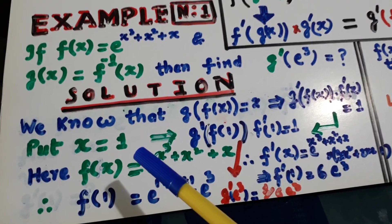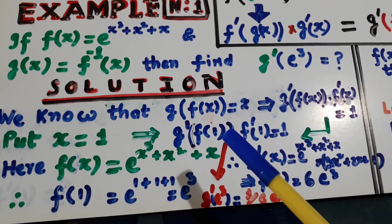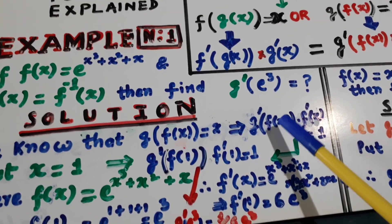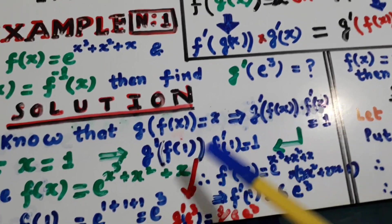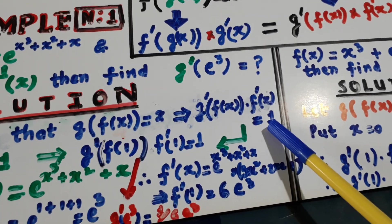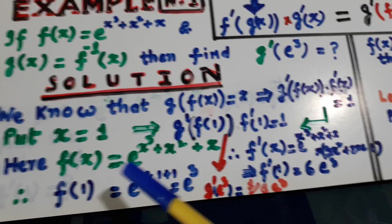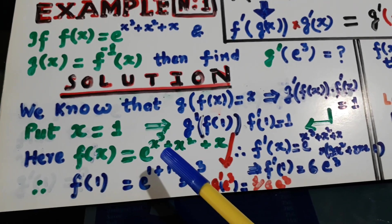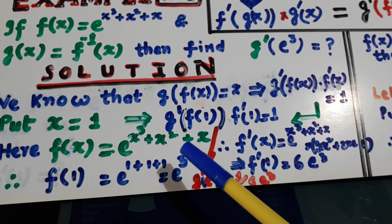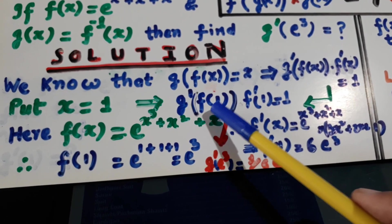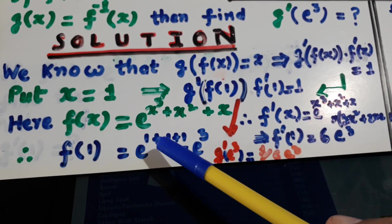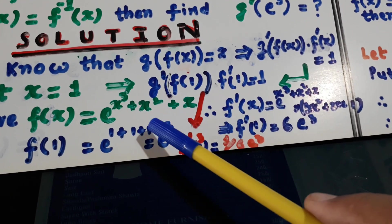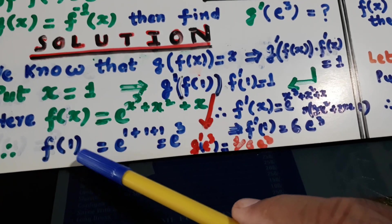Now put x equal to 1. It becomes g dash of f(1) into f dash 1. Put x equal to 1 in f(x). f(x) is given to be e raised to power x³ plus x² plus x. So f(1) equals e raised to power 1 plus 1 plus 1, that is e³. So f(1) is equal to e³.